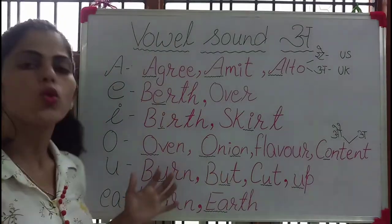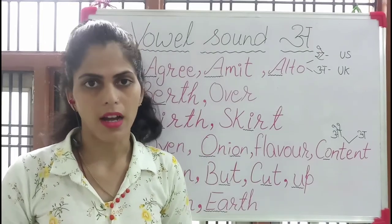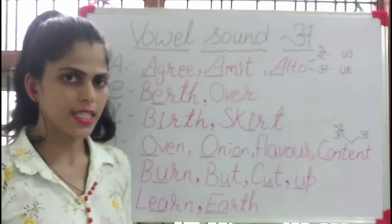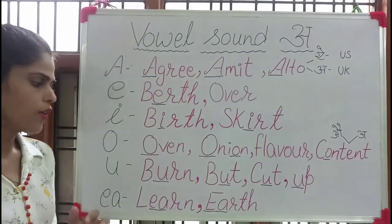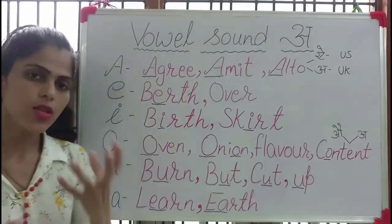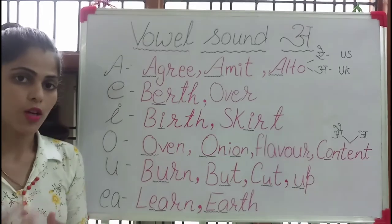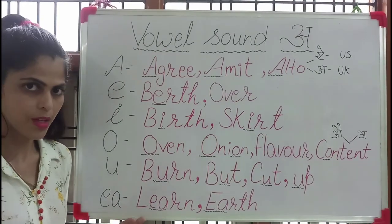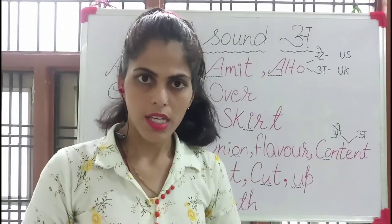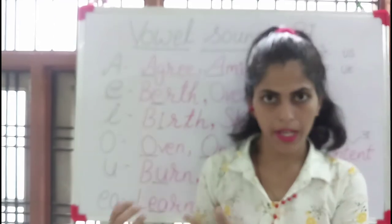Now you can see U. U is very clear — if you read A to Z, you can see that U sounds like Up, Umbrella, Ugly. So you can see: burn, cut, up, cup. Now we can discuss the EA combination. E and A mixed together produce an A sound — E is silent. So we can see: Learn, Earn, Earth. The EA combination produces the A sound.